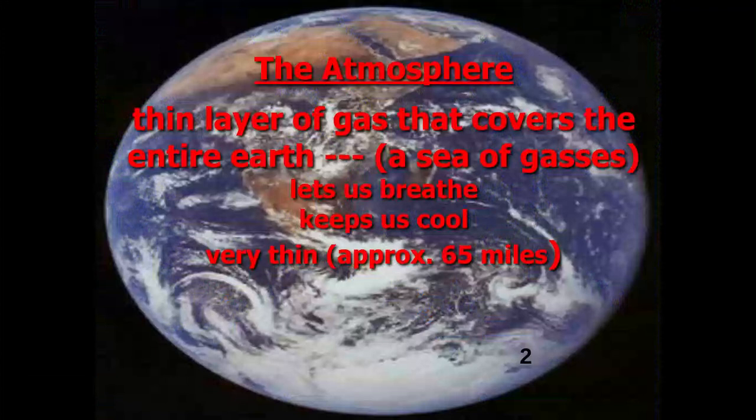Let's go ahead and take a look at what is an atmosphere. We're going to find later when we get into the solar system that many planets have atmospheres. The one we're particularly interested in in this discussion is our own, the Earth's atmosphere. Typically an atmosphere represents a very thin layer of gas that covers the entire Earth. And I like to look at the atmosphere as a sea of gases — it behaves much like water, but we can't see it.